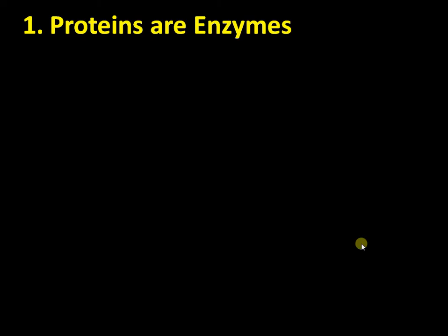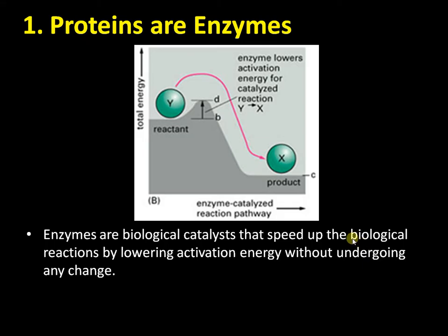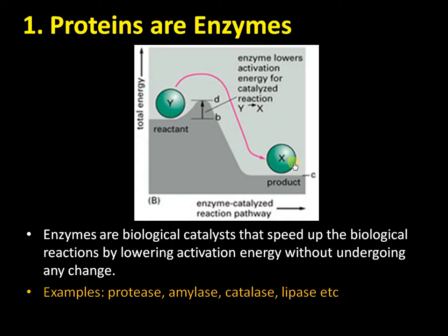The most important activity of proteins inside the cell is enzymatic activity. They are like the workforce inside the cell, with thousands of enzymes continuously working. Enzymes are biological catalysts that speed up biological reactions by lowering activation energy without undergoing any change. Examples include protease, amylase, catalase, and lipase, involved in functions like protein degradation and starch degradation.